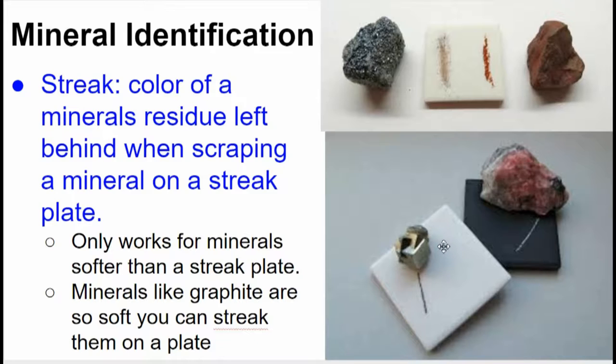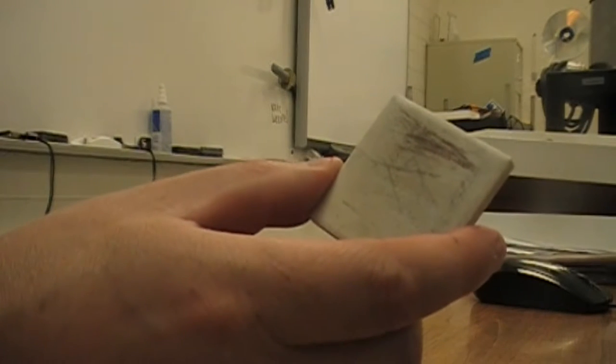So what you're going to want to do is you're going to get two streak plates in our demonstration today. One will be black. One will be white. And in those streak plates, you're going to streak the minerals on both of them because some will streak better and clear on white. Some will streak better and clear on black.